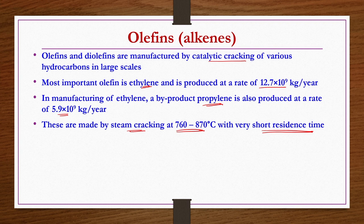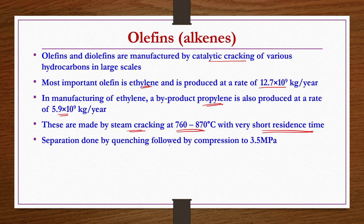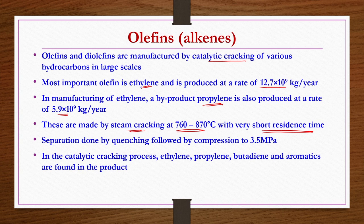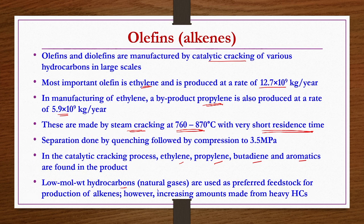Separation of steam cracking products is done by quenching followed by compression to 3.5 MPa. In the catalytic cracking process, ethylene, propylene, butadiene, and aromatics are also found. Low molecular weight hydrocarbons such as natural gas are preferred feedstocks for production of alkenes, though increasing amounts are made from heavy hydrocarbons as well.